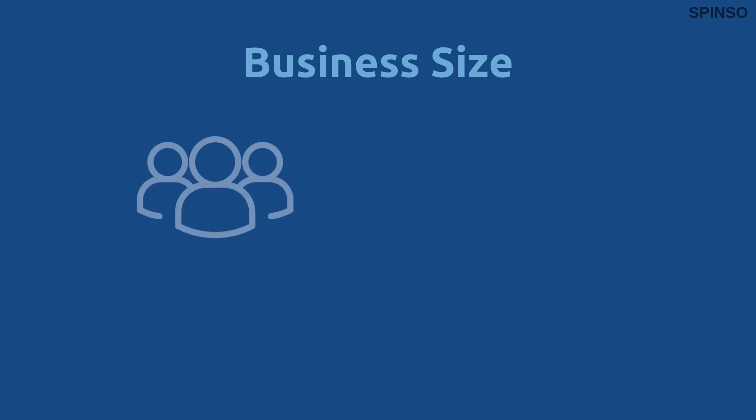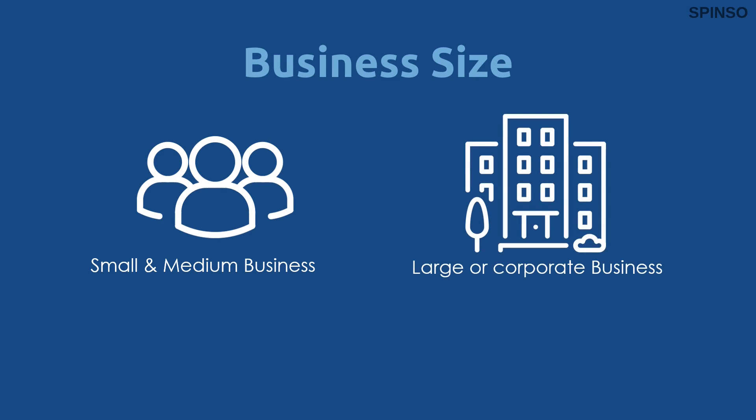The editions can also be broadly categorized into two segments according to feature and use. The first segment is for individuals, start-ups, or small and medium businesses. The second is for large businesses or corporates. Editions like Light, Basic, Standard, and Professional are suitable for small and medium businesses, whereas Premium and Enterprise are suitable for large businesses or corporates for managing high-volume data.